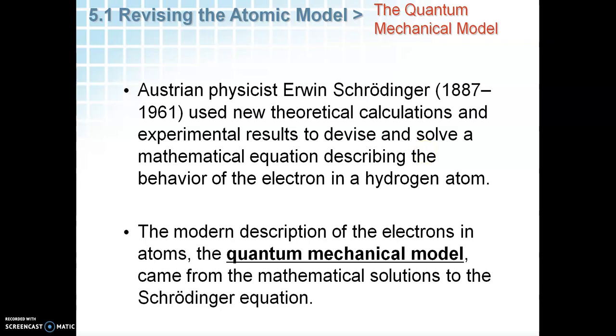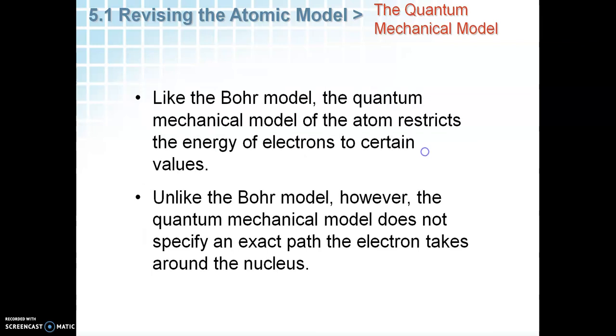When he did that, he found out what the electron was, at least mathematically, doing as it moves around the nucleus. Now, one thing that he kept from Bohr, or that evolved out of his equations that agreed with Bohr model, the electrons are limited to specific energy values. So that little ladder, low energy, medium energy, high energy, and so on, that doesn't go away. The electrons still are limited to how much energy they can have, and they can't occupy the spaces in between.